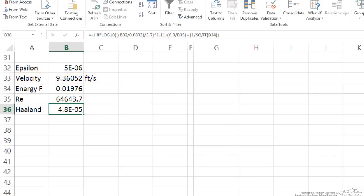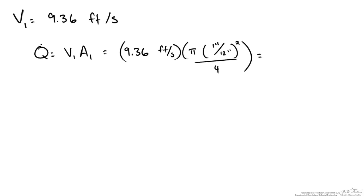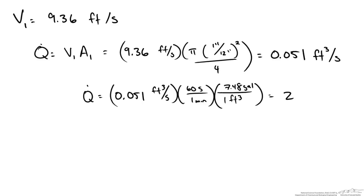So we are almost there. So we found V1. We wanted to solve for Q. So Q is just going to equal V1 times A1. This gives me a flow rate of 0.051 feet cubed per second. Now that does seem really low except we are looking for it in terms of gallons per minute. So multiply by 60 seconds and use the conversion from feet cubed to gallons and I get 22.9 gallons per minute. It seems like a fairly high flow rate.